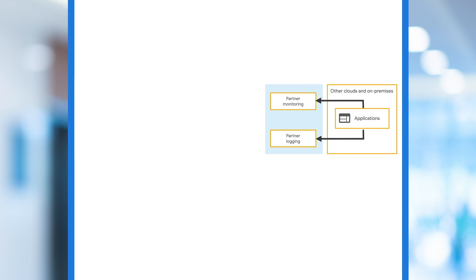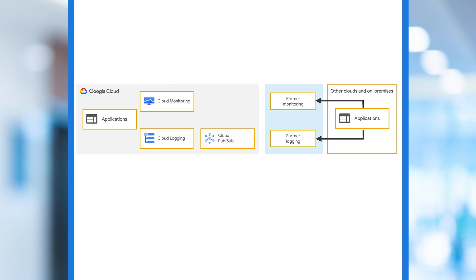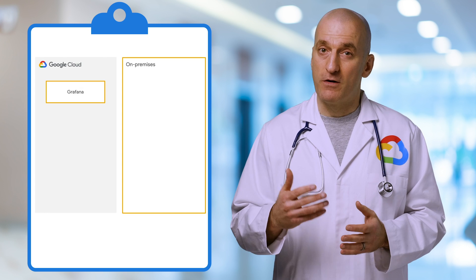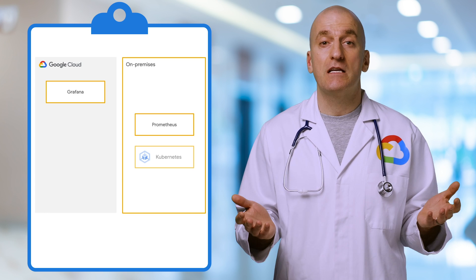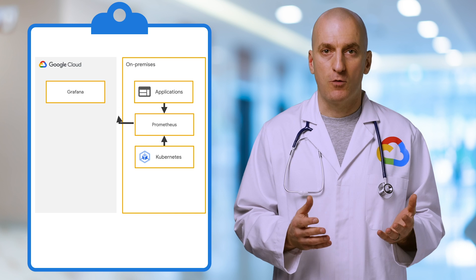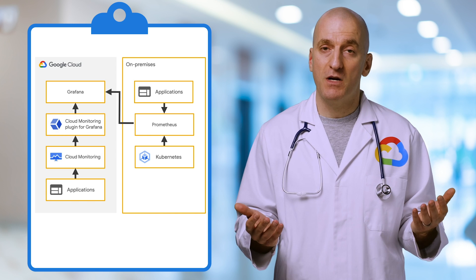We've now covered using Google Cloud as your single pane of glass. Let's look at our other pattern: exporting data from Google Cloud to a third-party service. In this scenario, there are two primary methods of sending that information. The first method involves the third-party tool integrating with the Monitoring API to consume metric data. For logs, you'll have to set up a Cloud Logging export to a PubSub topic. You'll then be able to connect your preferred tool as a subscriber to receive those logs. For the other method, you may choose to leave the data where it is and simply aggregate at the presentation layer. Grafana is an excellent way to achieve this and can be used with multiple backends, including Cloud Monitoring.